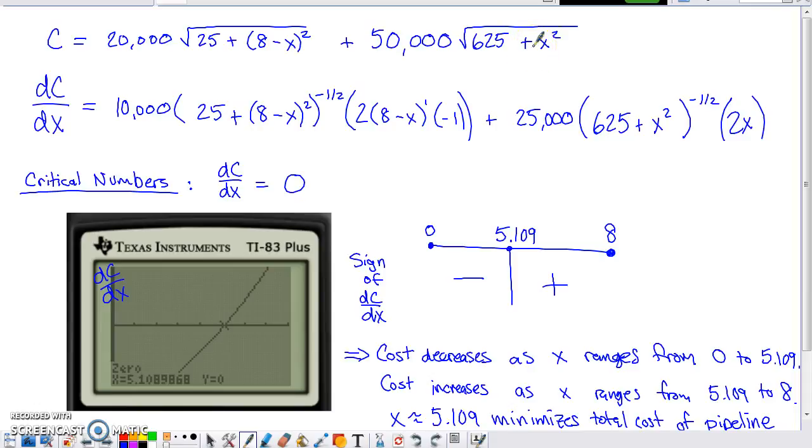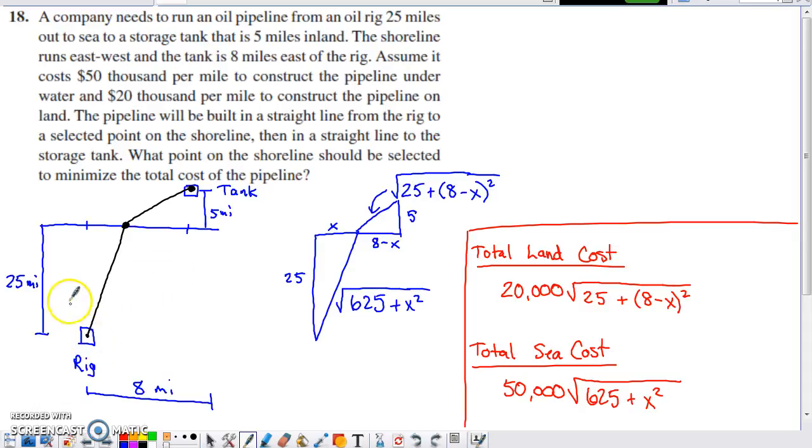It makes sense to realize that we're not going to be building to an x value that's negative, because if we were building to an x value that's negative, that means we're building to the left initially and then back this direction. That's definitely not going to minimize cost. Similarly, we're not going to build to an x value that's above 8. We're not going to build over to a spot here on the shoreline and then back to the tank. We're installing too much pipeline, spending too much money. It seems safe to say we're either going to build straight from here to here and then the rest of the way to the tank, or the other extreme would be from here to right here in a straight line, or at a point in between.